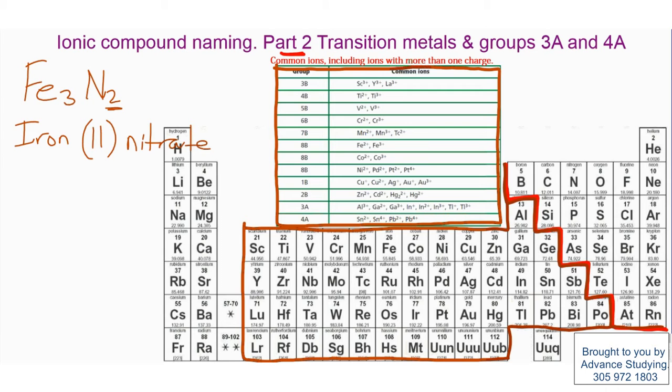Let's pick, for example, an element of this chart with more than one charge. Let's use cobalt. So we say that it is CoCl3.